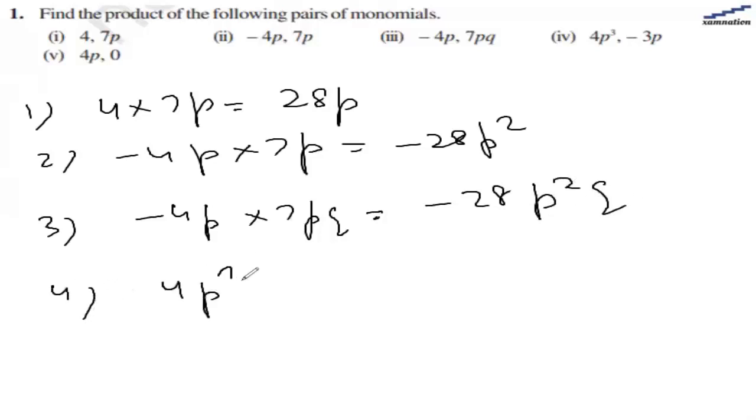Fourth will be 4pq multiplied by -3p. So 4 and -3 will get us -12, and pq and p will get us p raised to the power 4.